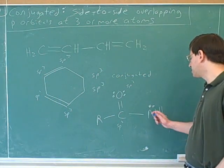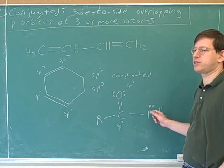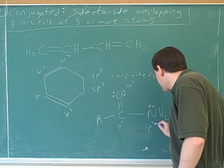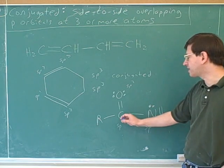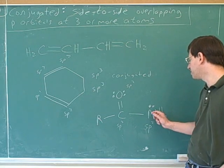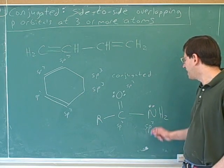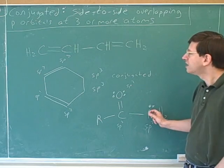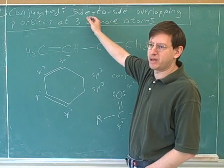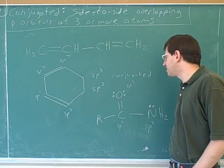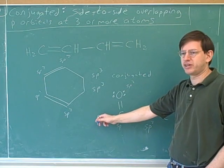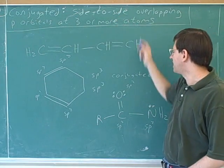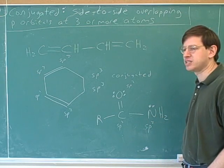So remember, in normal situations this nitrogen would be SP3, following the normal rule of hybridization. However, the exception kicks in because it has a lone pair and it's connected to something that's SP2. So we break the normal rule and say this nitrogen is SP2. That means it can contribute a p-orbital, and this can contribute a p-orbital, and this can contribute a p-orbital — three is as many as we need. This might not be completely conjugated because maybe there are no p-orbitals over on this R group, but we just need three adjacent atoms with side-to-side overlapping p-orbitals. So this would come in as being conjugated.